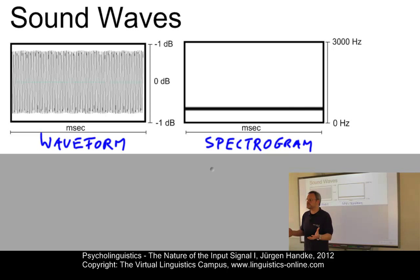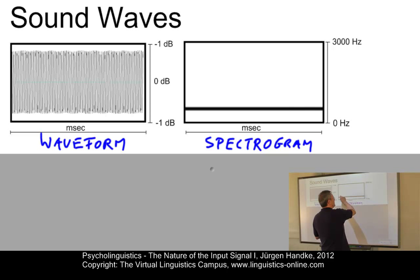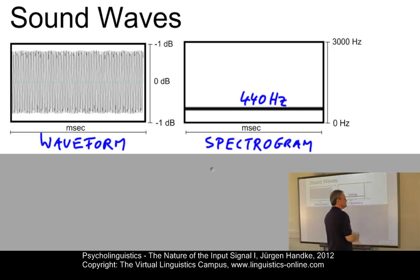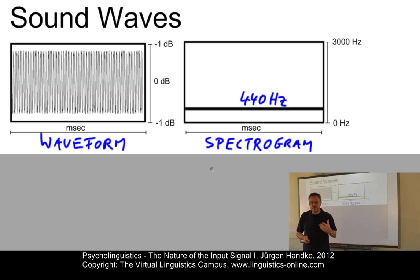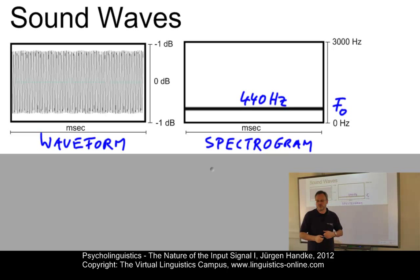What can we see on this spectrogram? We can see precise frequency information. For example, we can see that our simple tone involved the frequency of 440 hertz. This is the frequency of our sound input. And this sound input frequency is referred to as F0, or in full, you call it fundamental frequency.